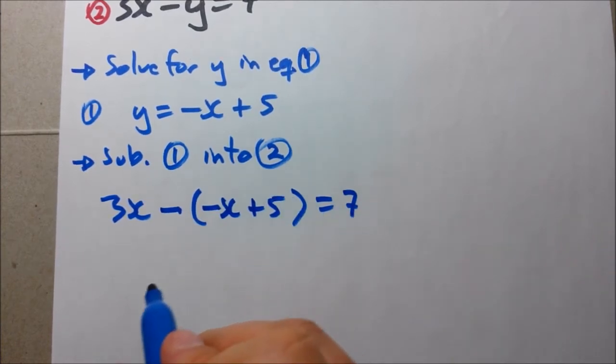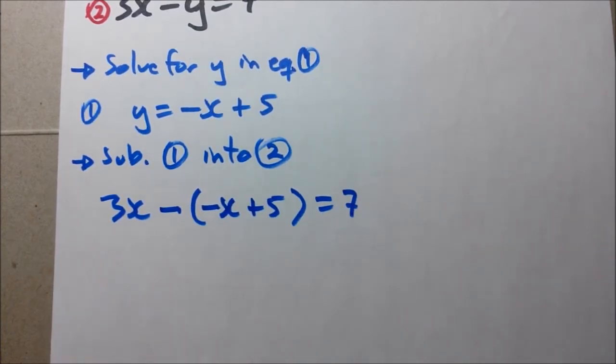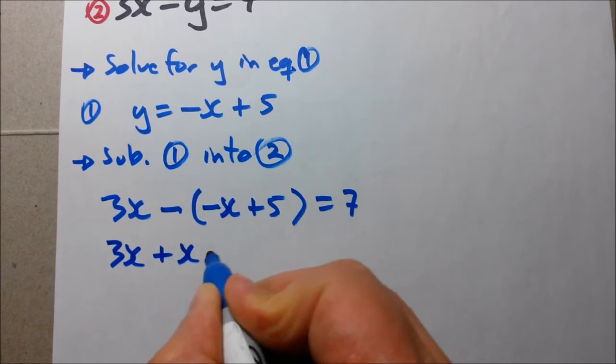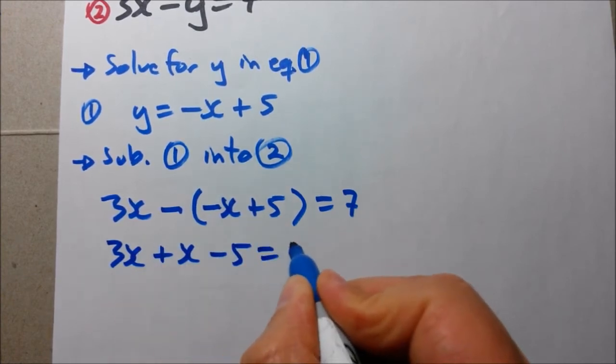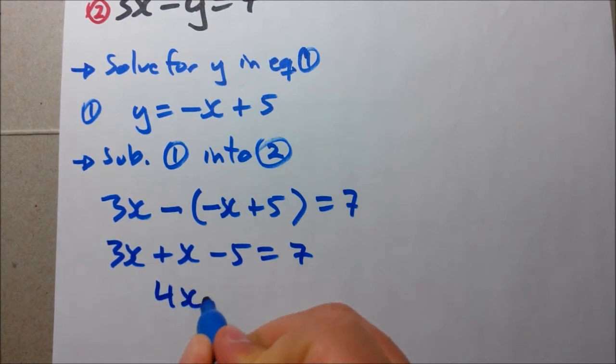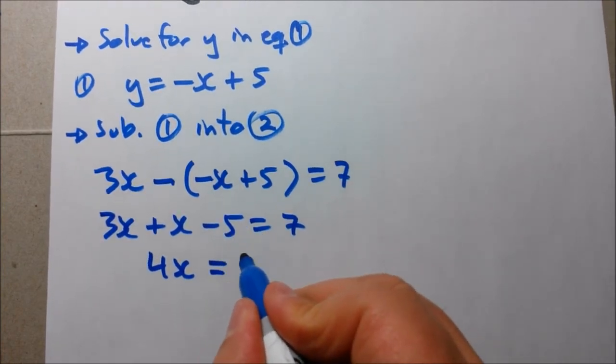And now we start simplifying this. So we have 3x, a negative in front, so we can do the following. 3x, this becomes plus x minus 5 equals 7. Now 3x plus x becomes 4x, and then minus 5 can go on the other side. So this becomes 7 plus 5, that gives us 12.